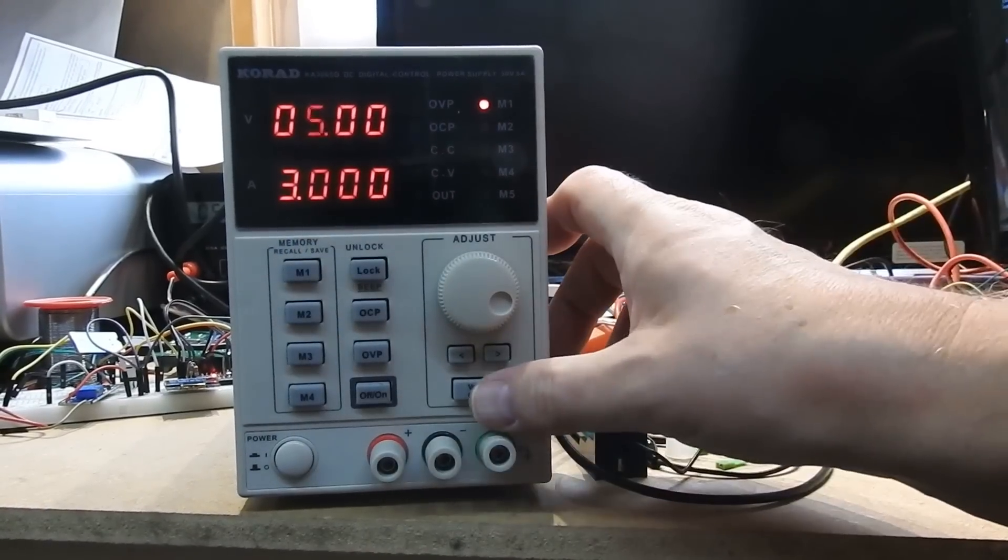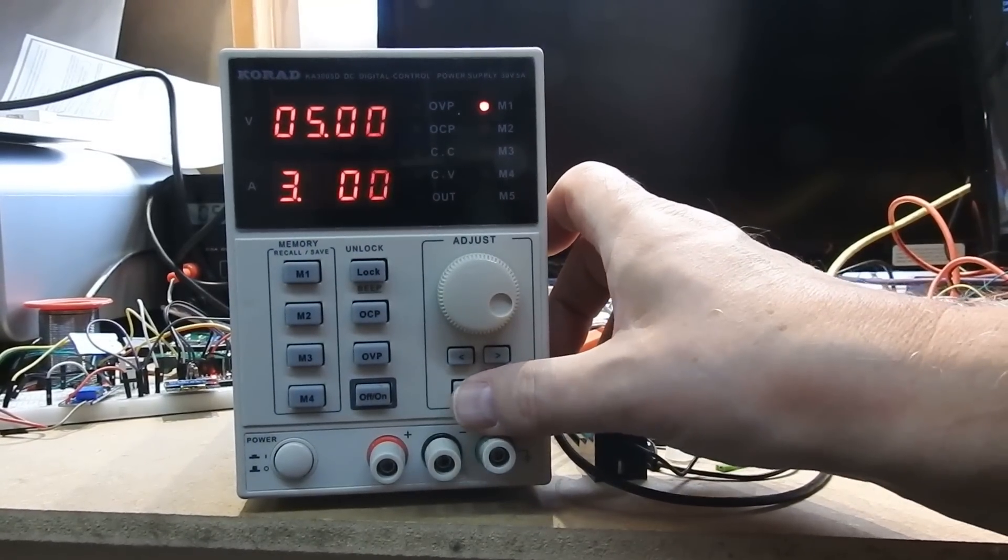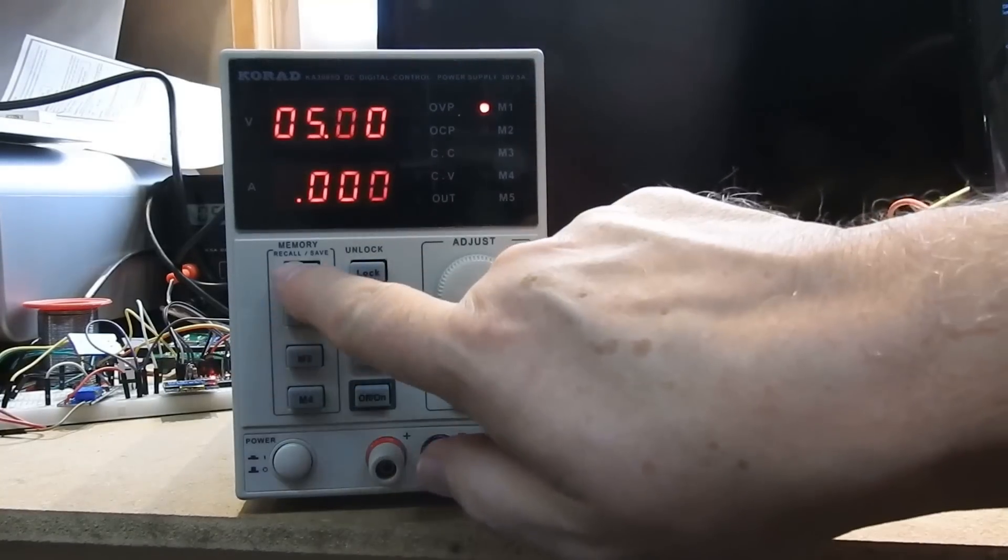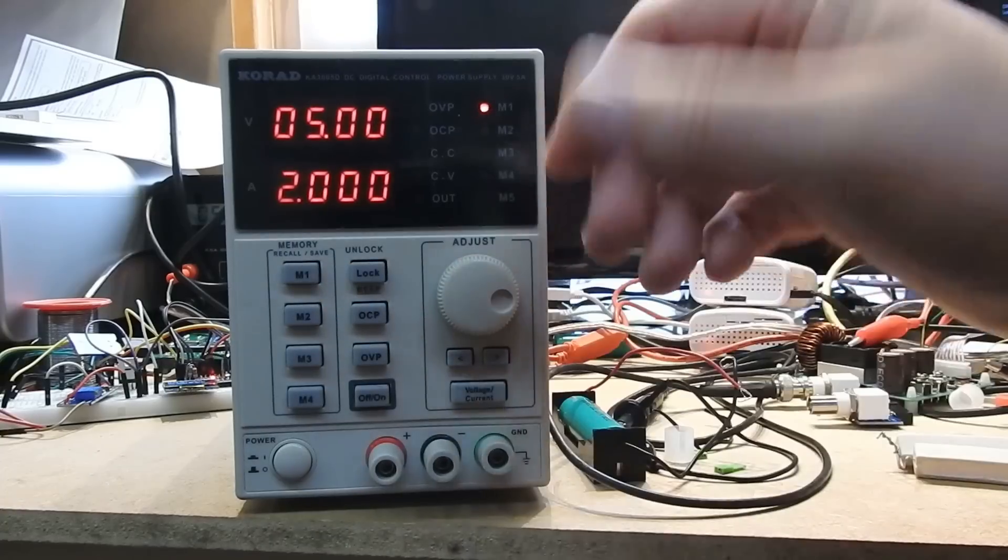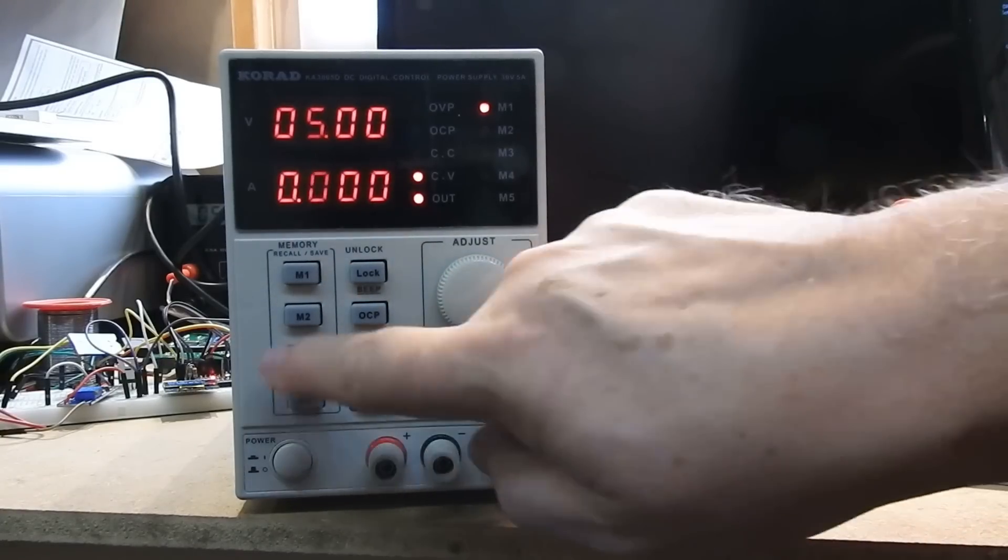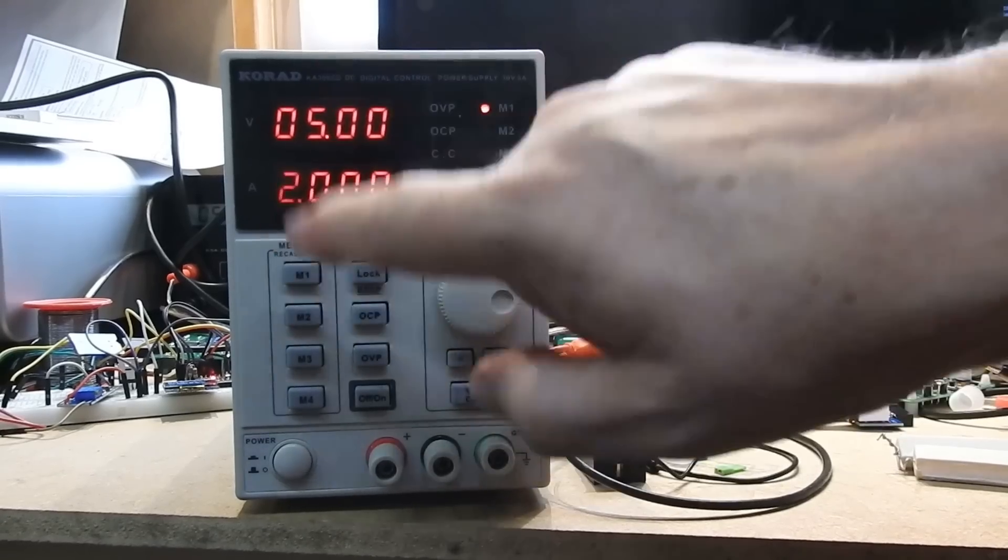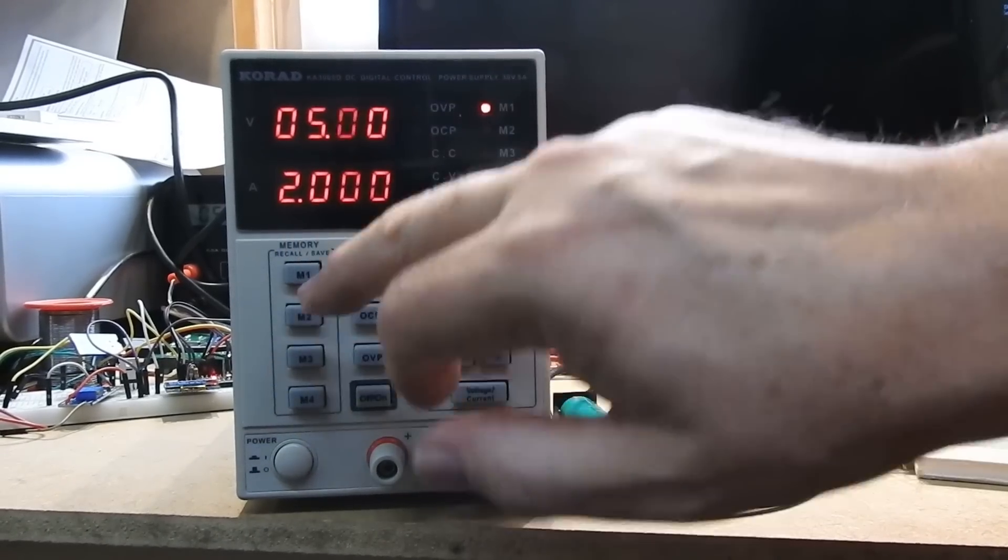And as you'll see now, you can go back and forward between the different stored, up to four different stored voltage and current combinations. Which is pretty much ideal for me. I think I would have a couple of 5 volt stored combinations and maybe a couple of 12 volt stored combinations.